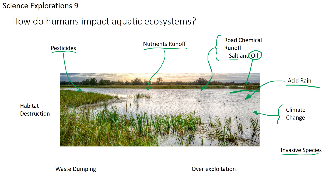Invasive species are a real problem — for example, at Osprey Marsh near Stephen Lewis Secondary School, pond plants from people's backyards are being dumped into the marsh. Water hyacinths, native to the Nile River in Africa, are now growing there and out-competing native plants. Similarly, non-native turtle species and goldfish released into Ontario lakes and rivers can survive and out-compete native fish species. Do not dump pond plants or pets into local waterways.